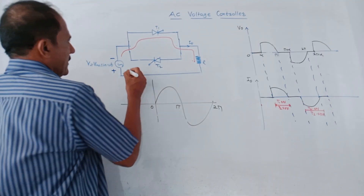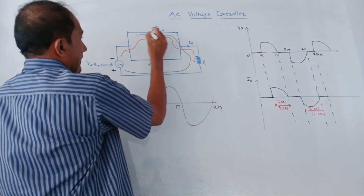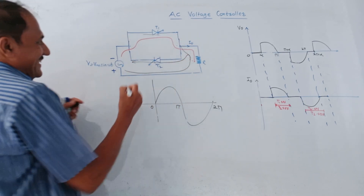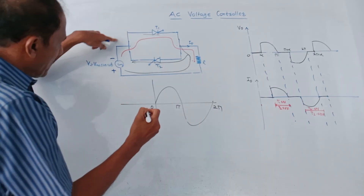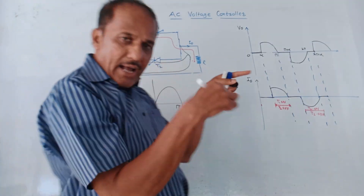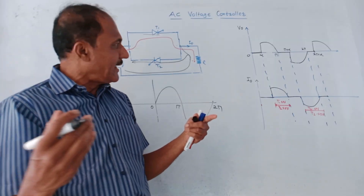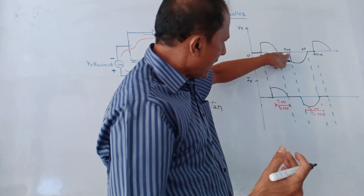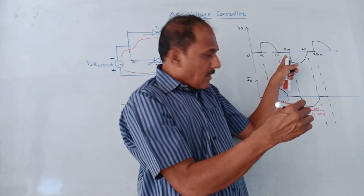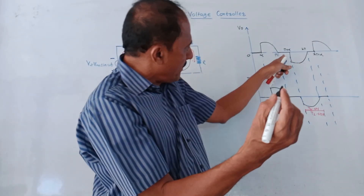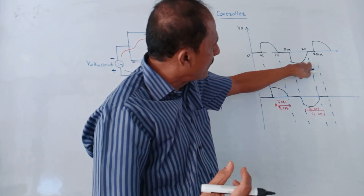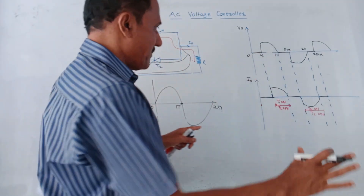In the negative half cycle, the polarity gets reversed — this terminal becomes negative and the other becomes positive. Due to this reversed connection, T1 is switched off and T2 is switched on. Thyristor T2 is fired at angle alpha in the negative half cycle, so triggering takes place at angle π + alpha. Conduction of T2 starts from π + alpha and follows the negative waveform.